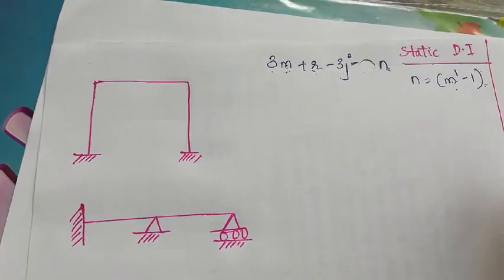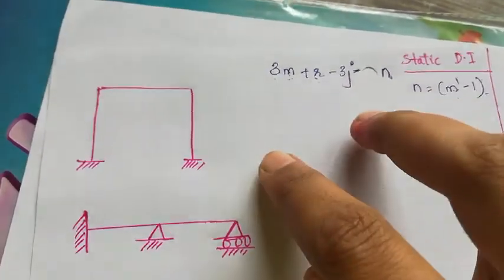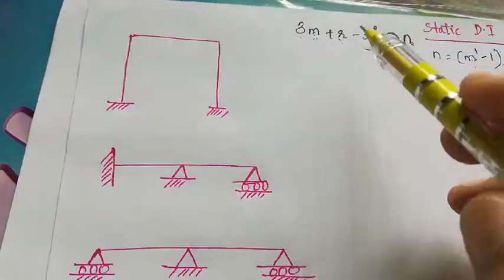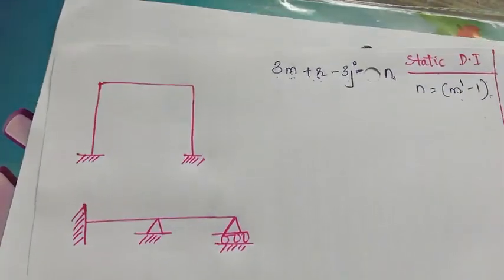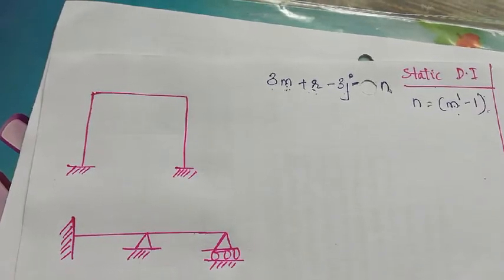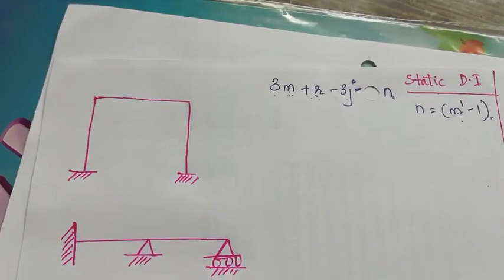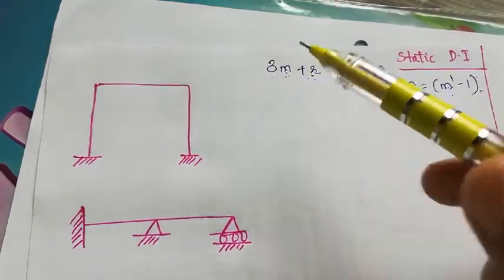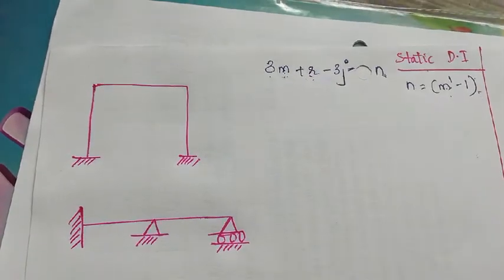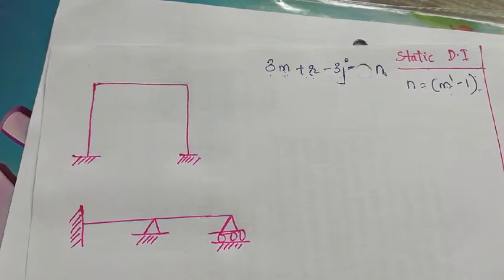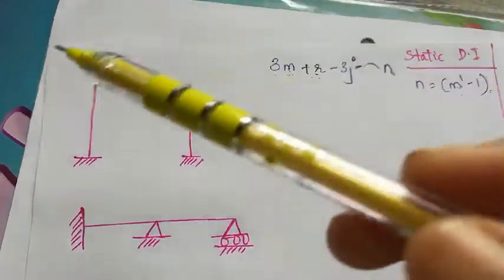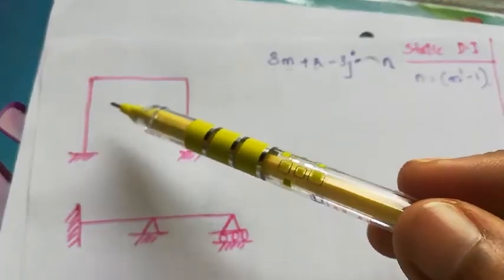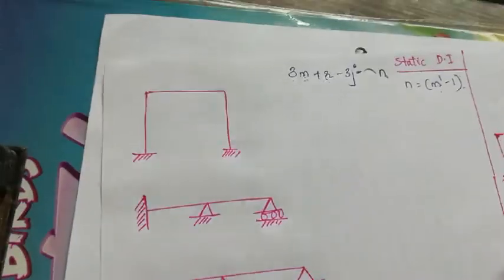Now let us do problems using the equation 3m + r - 3j. This equation is applied for plane frames. A frame means a rigid structure connected rigidly at every joint. The first example is a portal frame.